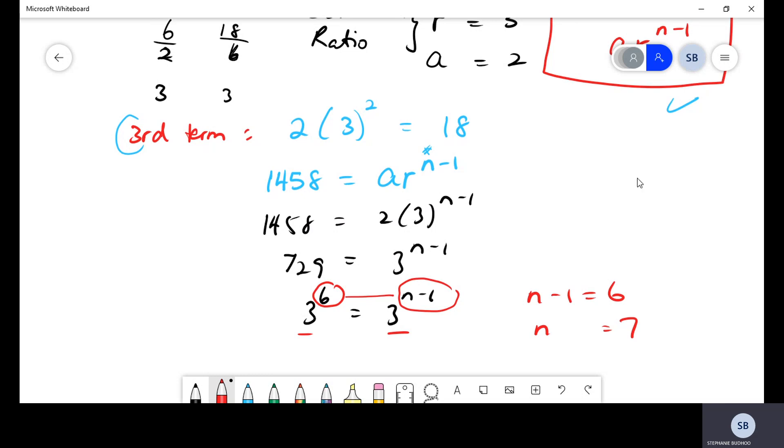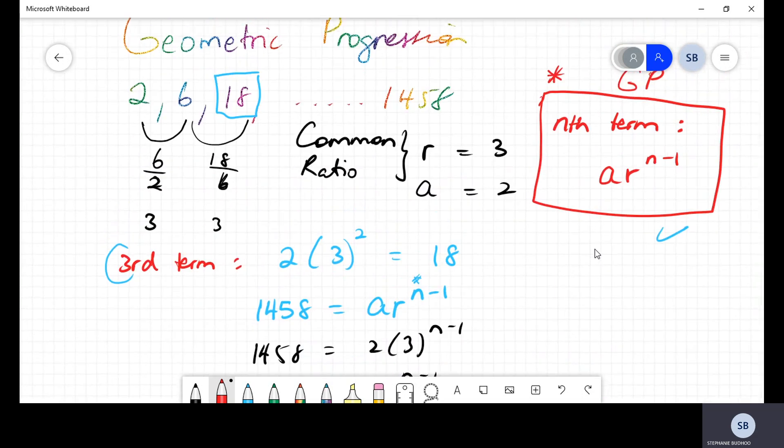Therefore, in this geometric progression, it must mean that 1458 happened to be the 7th term. So that's another useful way you can apply the nth term formula to help you figure out how many terms or what's the value of that particular term, what's the value of N for that sequence.